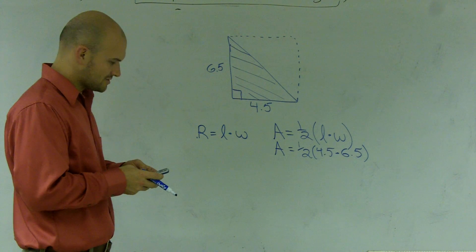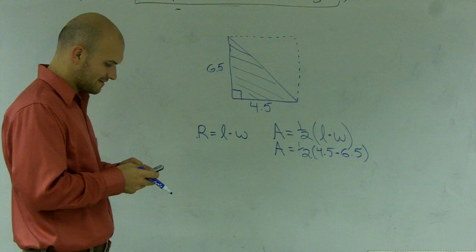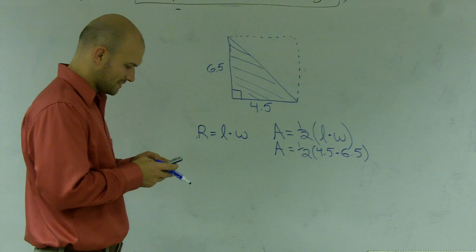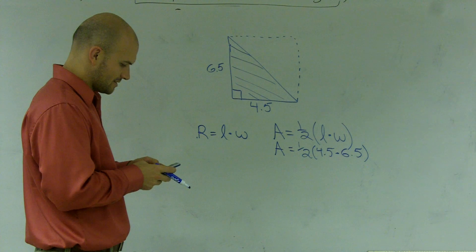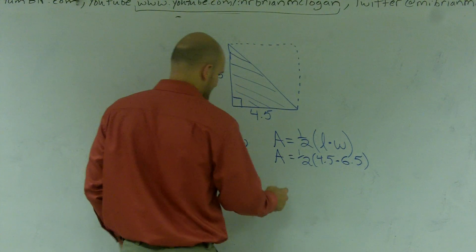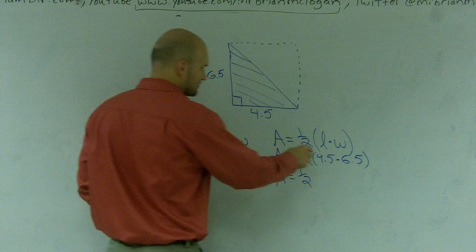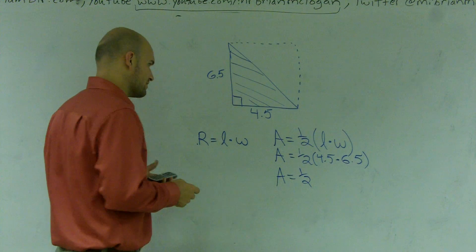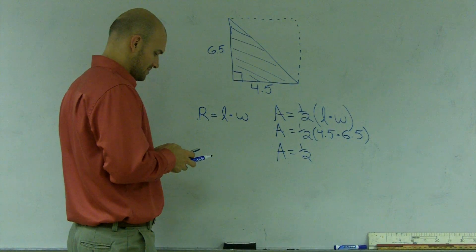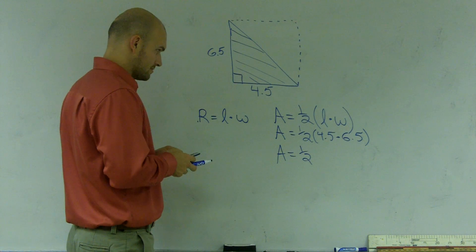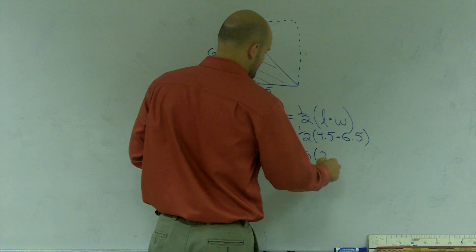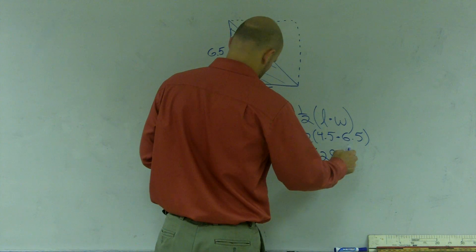So let's just do 4.5 times 6.5 without doing the math in my head, which I know I could do. And by the time I said this, we already have area equals 1 half... 6 times 4 is 24... Why does it not work? 4.5 times 6.5. Let me get the right answer there. Equals 29.25.